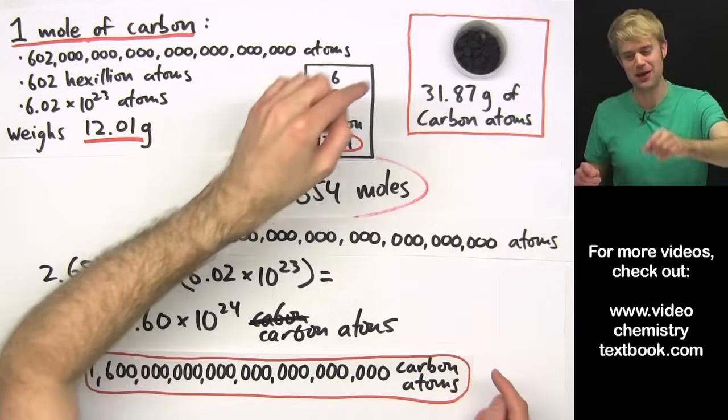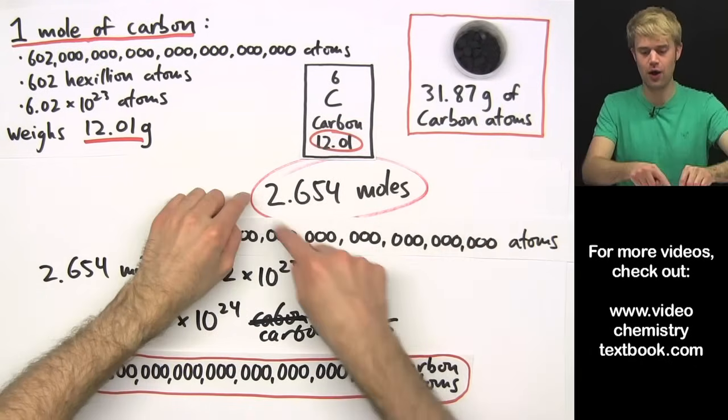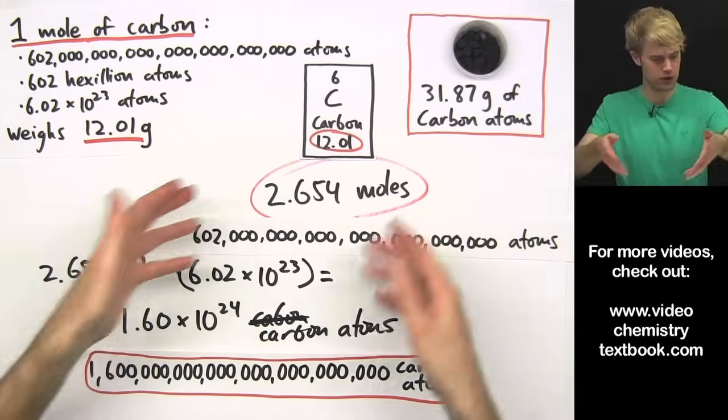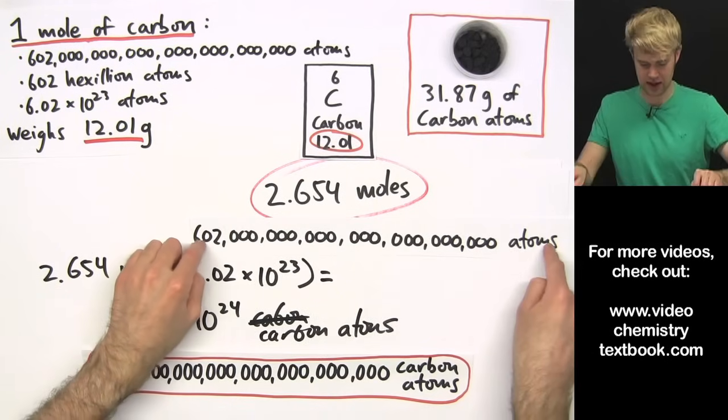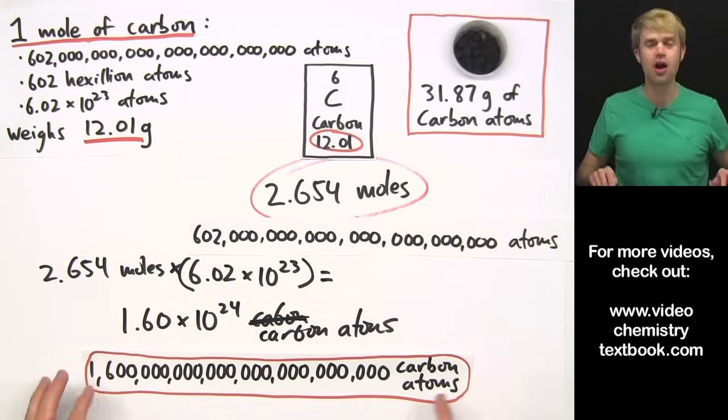We can figure out how many moles we have by weighing it. And then once we know how many moles we have, all we've got to do is multiply that by the number of things that are in a mole, and we get our final answer.